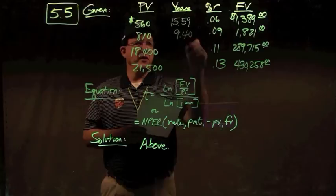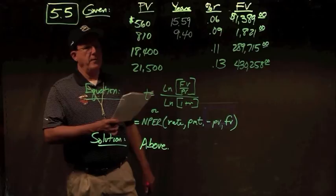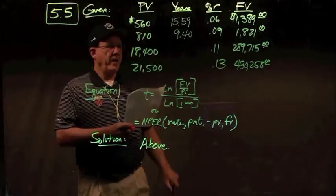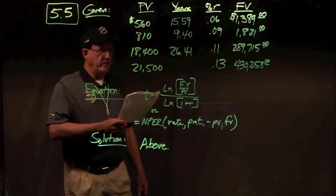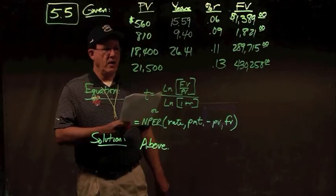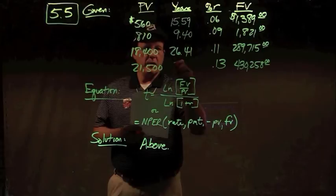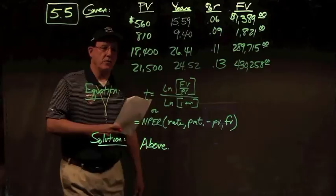Third case: ln(289,715/18,400) divided by ln(1.11) gives 26.41 years. Fourth case: ln(430,258/21,500) divided by ln(1.13) gives 24.52 years. Those are your answers for T in problem 5.5.